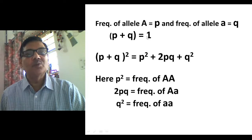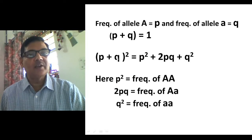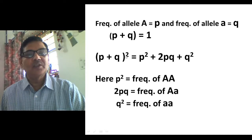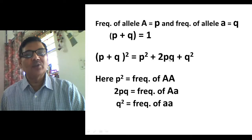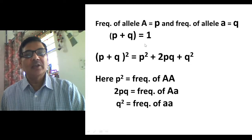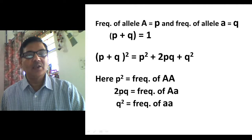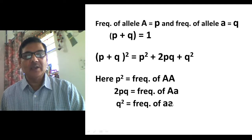As I mentioned, p + q = 1, and if you expand the binomial (p + q)², you get p² + 2pq + q². Here p² represents the frequency of homozygous dominant AA individuals, 2pq represents the heterozygotes, and q² represents the homozygous recessive aa individuals.